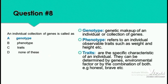Question 8: An individual's collection of genes is called genotype, phenotype, traits, or none of the above. We need to know the one-line definitions. Genotype is the genetic make-up of an individual. Phenotype is concerned with the observable traits — physical characteristics like height and weight. Traits are the specific characteristics of an individual, such as being honest or brave.